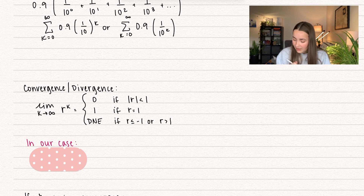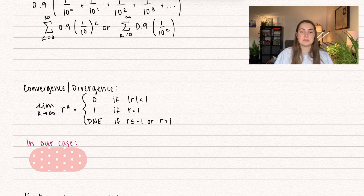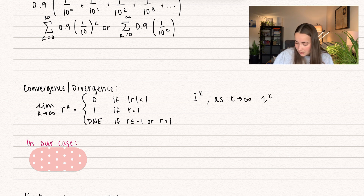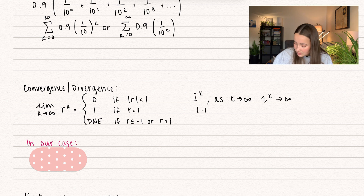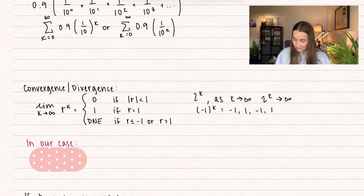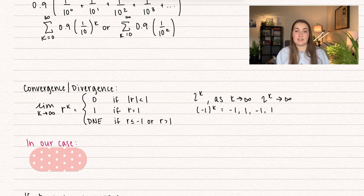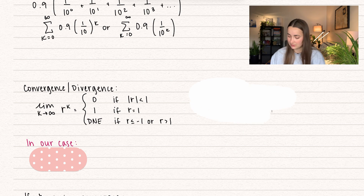We also have when r is less than or equal to negative 1, or when r is greater than 1, the limit's not going to exist. So let's take 2 to the power of k — as k goes to infinity, 2 to the power of k is going to diverge to infinity. If it's equal to negative 1 to the k, that's going to oscillate: negative 1, positive 1, negative 1, positive 1 — that's going to oscillate forever, so it's also diverging. If it's negative 2 to the power of k, that's also diverging — to positive infinity when the power is even, and negative infinity when the power is odd.